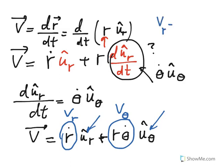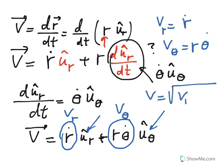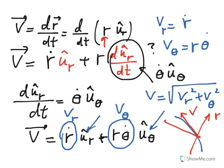The radial component of velocity V sub R has a magnitude of R-dot, and the transverse component V sub theta has a magnitude of R times theta-dot. The magnitude of the total velocity is the square root of V sub R squared plus V sub theta squared. Velocity at any instant is tangent to the path, so if this is the R axis and this is the transverse axis, the velocity has a radial part V sub R and a transverse part V sub theta.